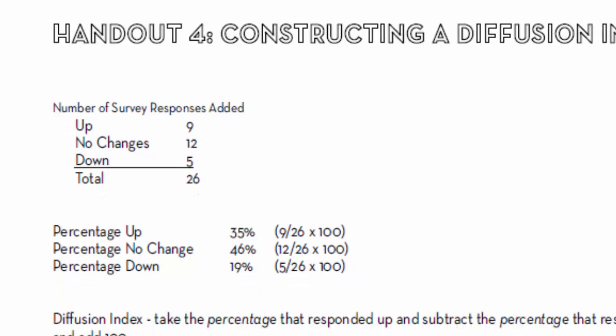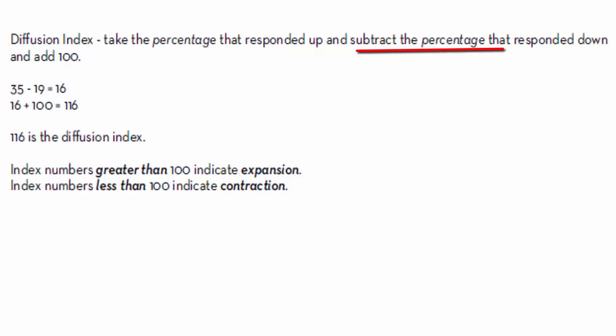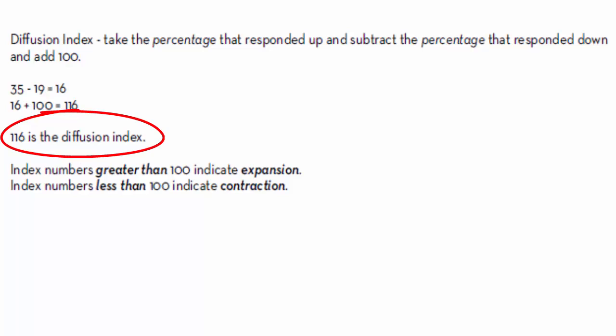Now we're going to calculate the diffusion index. What we want to do is take the percentage of respondents that answered up and subtract the percentage that answered down, and then add 100. In our example, 35% of our respondents said up. We're going to subtract the 19% that said down. That gives us 16, and then we add 100, so 116 is our diffusion index.